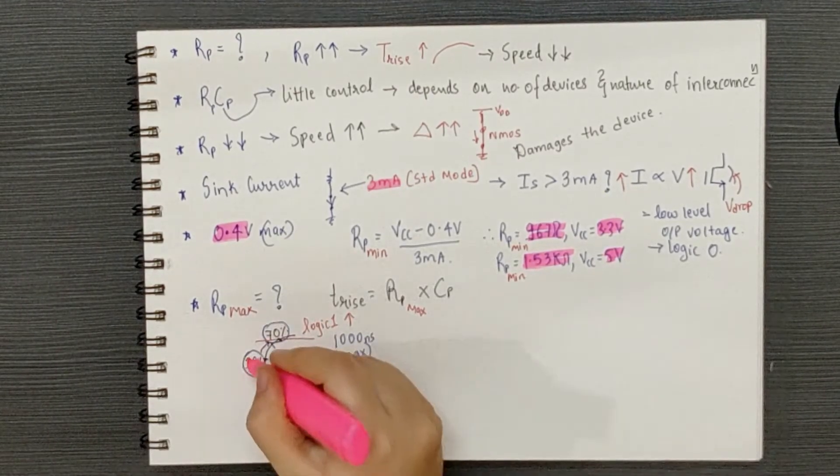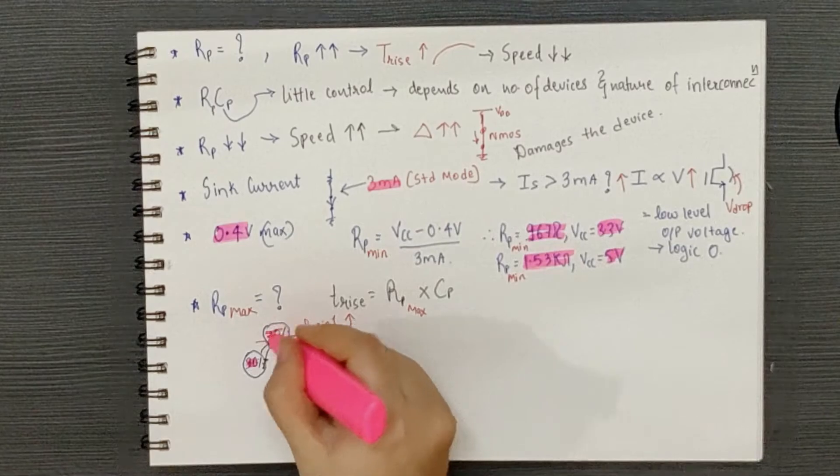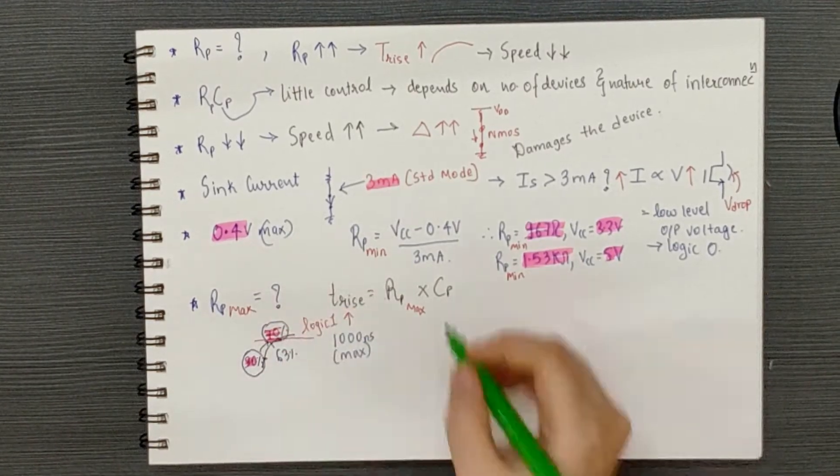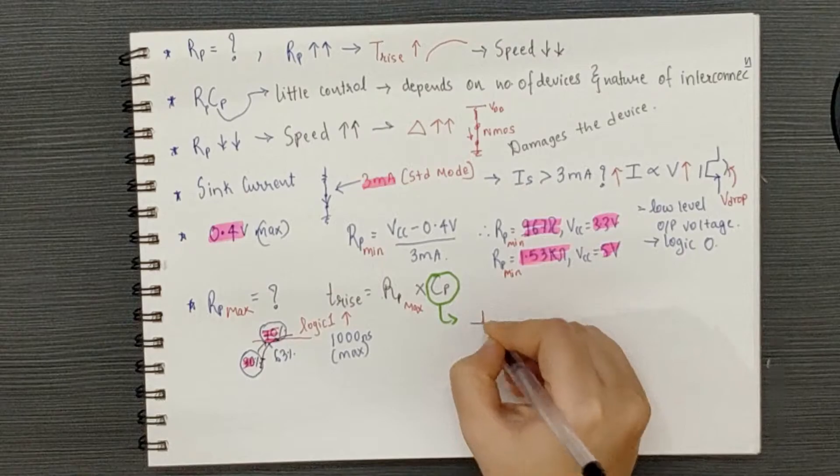So, for simplicity, we'll assume that RC tells us how long it'll take for the signal to rise from a voltage near ground potential to the logic high voltage. Thus, we've considered this formula.